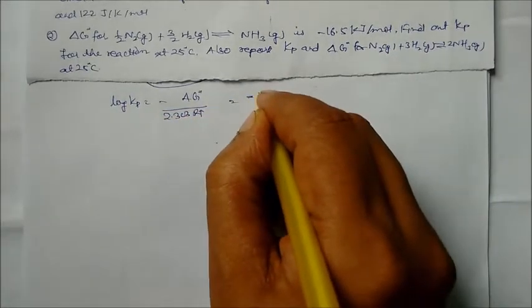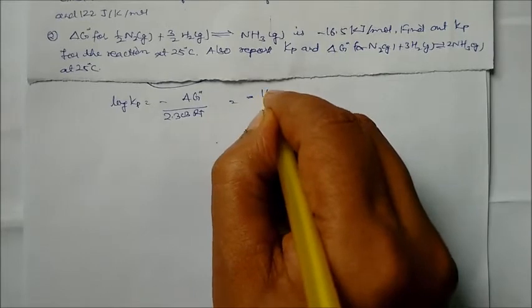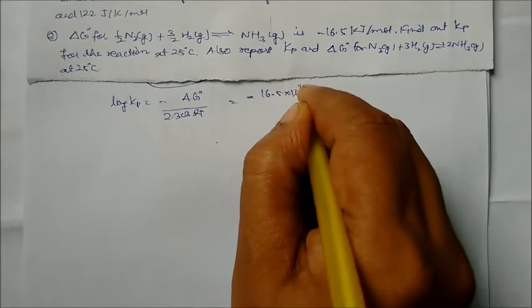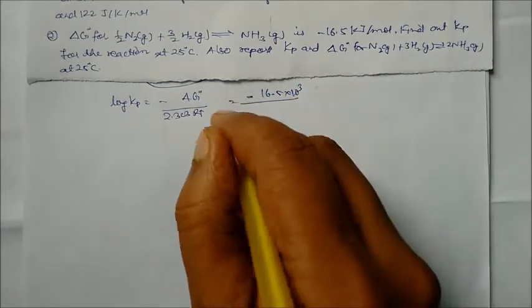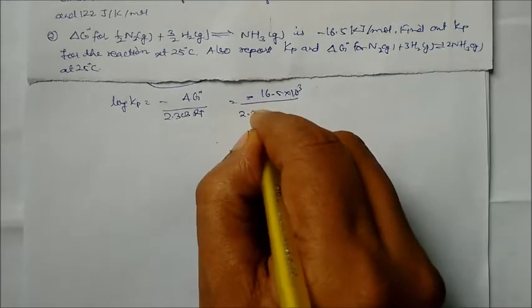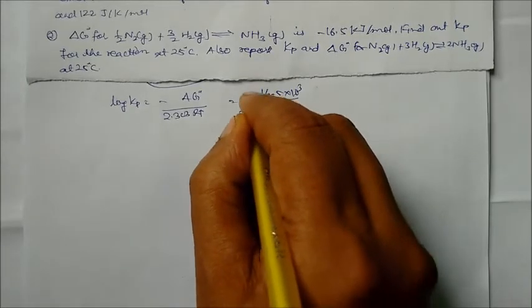Directly putting in the values: −(−16.5 × 10³) divided by 2.303, since ΔG° is negative here, it becomes +16.5 × 10³.